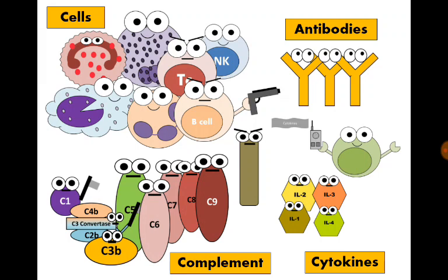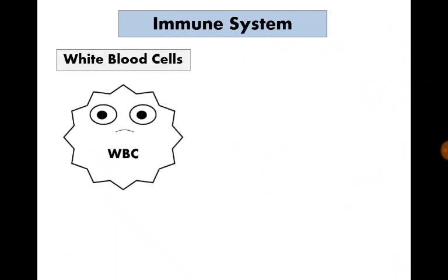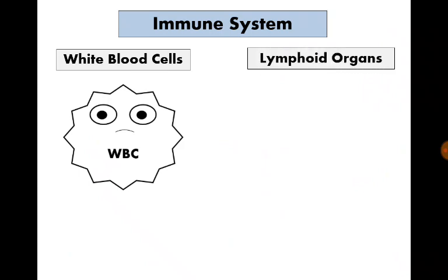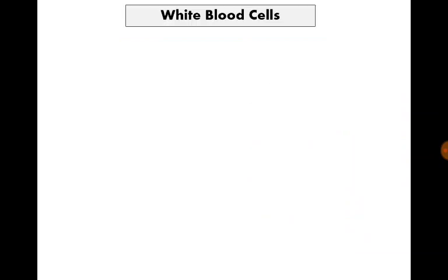Let's classify the immune system more specifically into cells — white blood cells — and the lymphoid organs in which synthesis and activation of immune cells occur. White blood cells are classified into granulocytes, monocytes, and lymphocytes. Granulocytes contain granules, which are bags of toxic products and mediators that can be secreted onto organisms. They are neutrophils, eosinophils, and basophils.